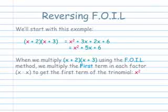We'll start with this example. When we multiply quantity x plus 2 times quantity x plus 3 using the FOIL method, we multiply the first term in each factor, x times x, to get the first term of the trinomial, x squared.